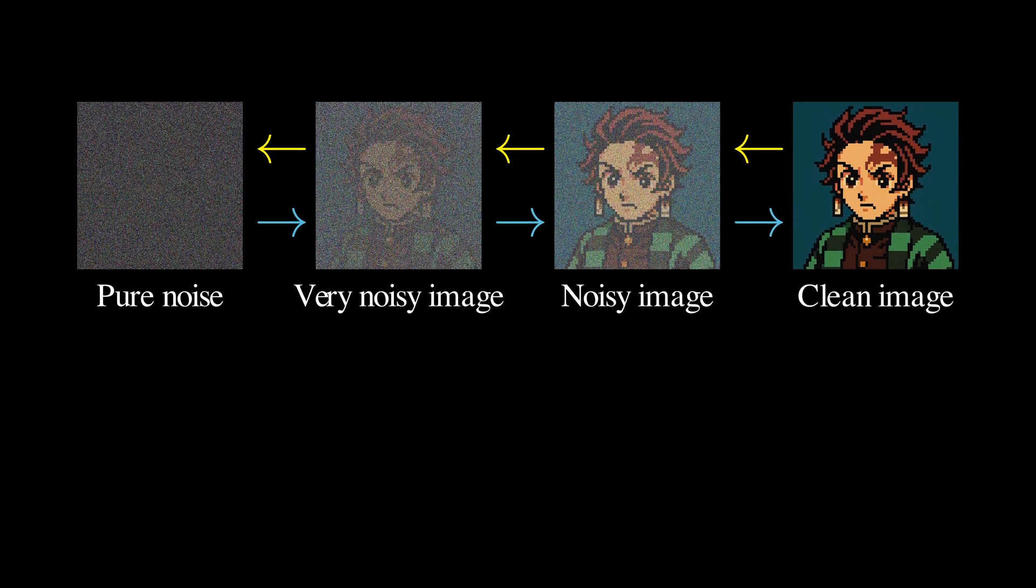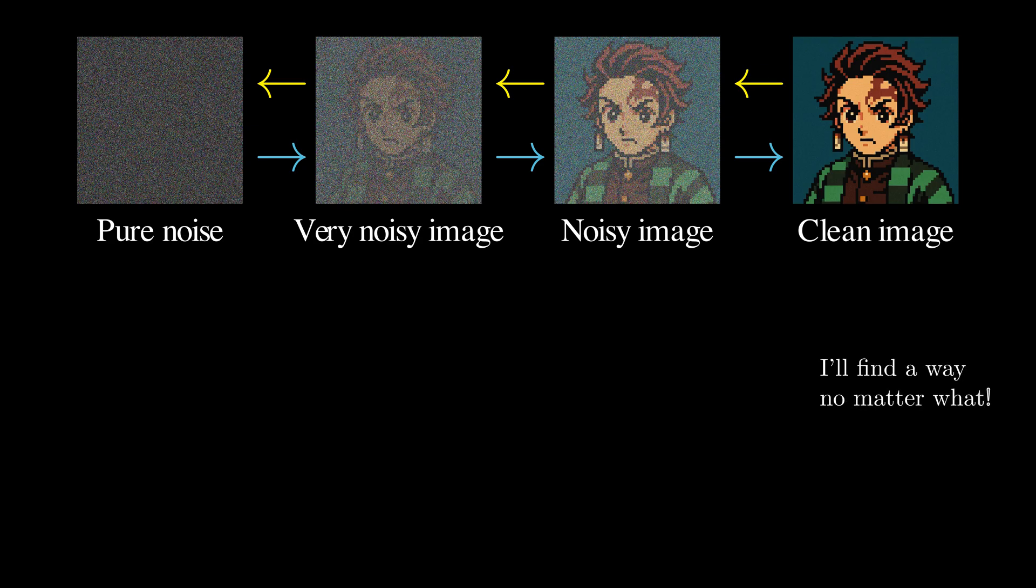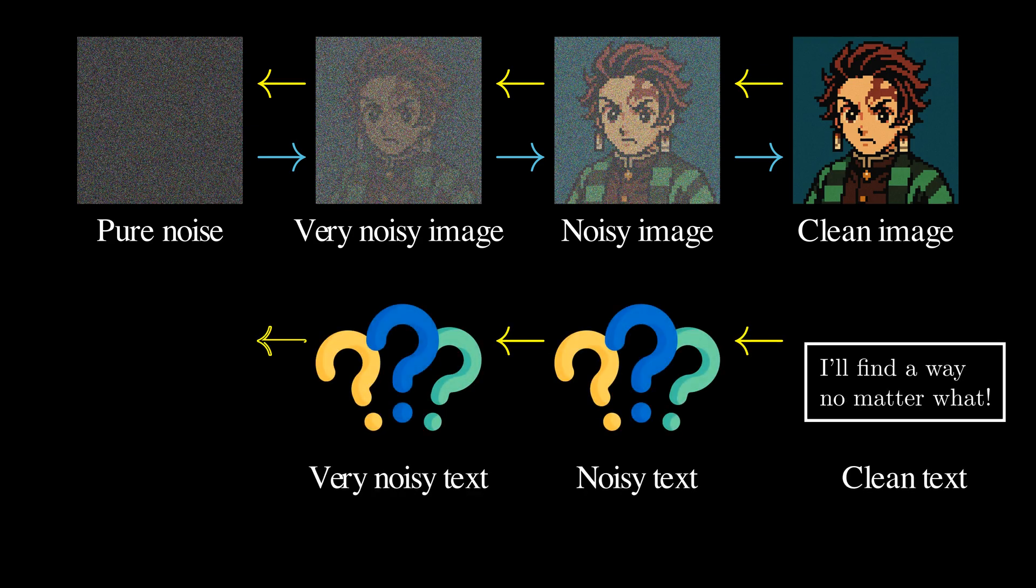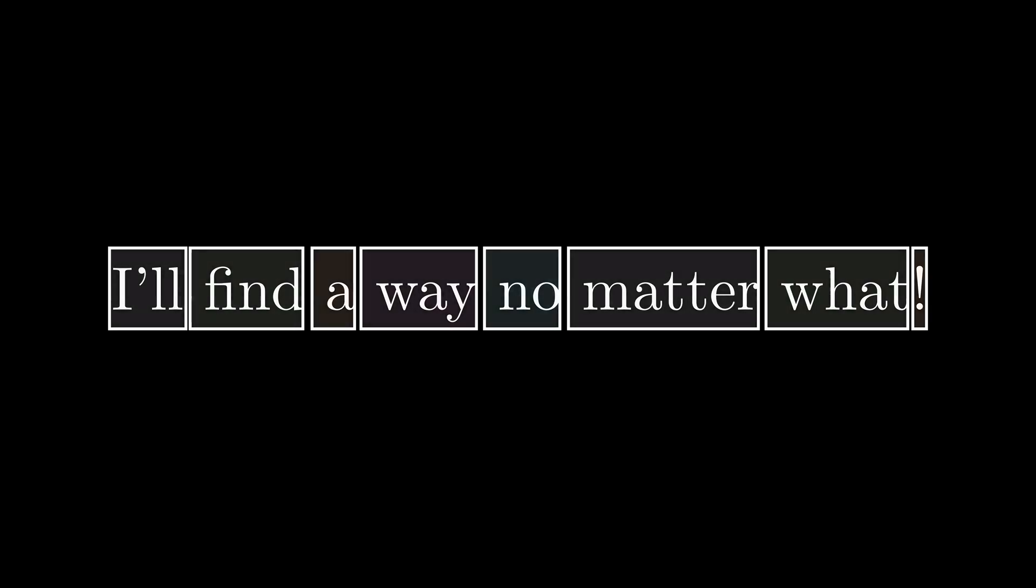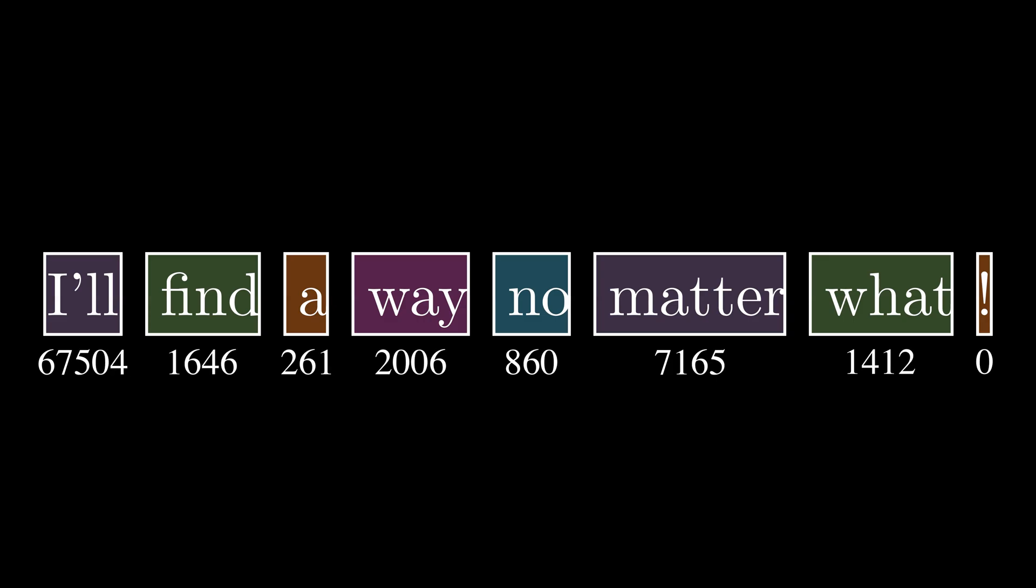But what about text? Like diffusion models for images, if we have this forward diffusion process, we can train a denoising model to generate text. But what does noisy text actually mean? Let's see how text is processed in AI language models. The first step is to break input text into a sequence of tokens. Each token has its own unique ID in the dictionary. This is known as tokenization.